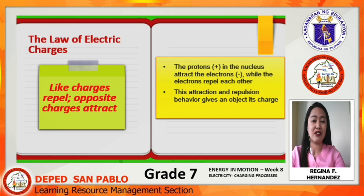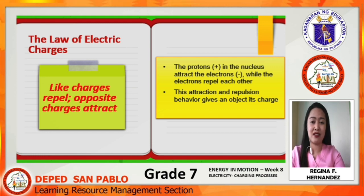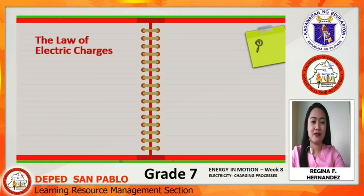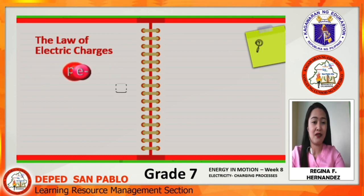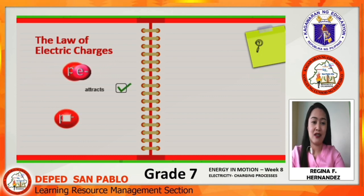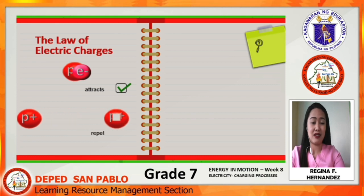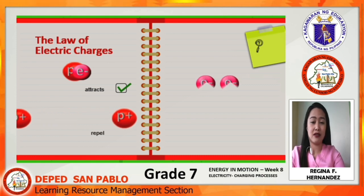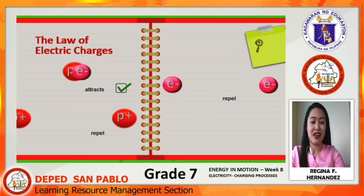This attraction and repulsion behavior gives an object a charge. When we have a positive and a negative charge, they will attract. A positive and a positive will repel. A negative and a negative will also repel.